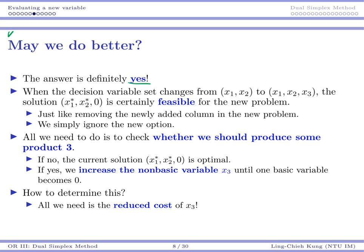Let's see how to do this. We know the decision variable set changes from x1, x2, to x1, x2, and x3, alright?